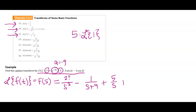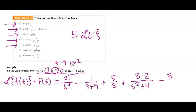There was a plus here originally, so plus three over s squared plus four for the sine term. For sine of kt where k equals two, I have three times two in the numerator, and s squared plus two squared which is four. For the cosine, I get s in the numerator, so three s over s squared plus four. And that's how we apply these Laplace transforms to transform little f of t into big F of s.